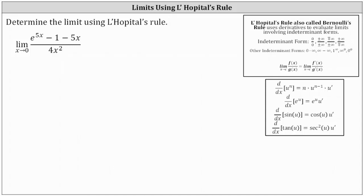We're asked to determine the limit using L'Hôpital's rule. Let's begin by checking the form of the limit. As x approaches 0, e to the 5x approaches e to the 0, or 1. Then we have minus 1 and minus 5x, where 5x approaches 0. So the numerator approaches 1 minus 1 minus 0, which is 0. And 4x squared also approaches 0. The limit is in the form 0 divided by 0, which is one of the indeterminate forms where we can apply L'Hôpital's rule.